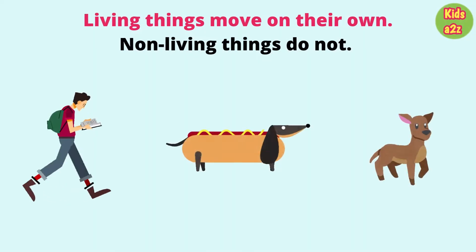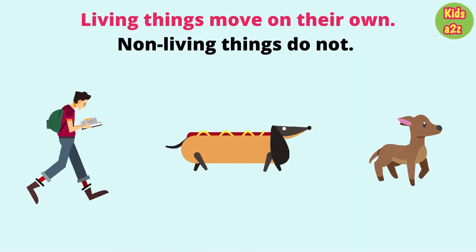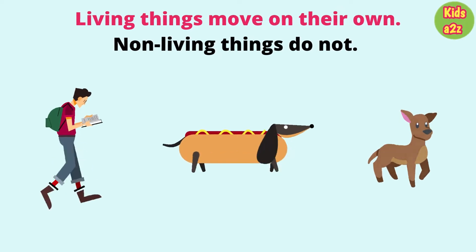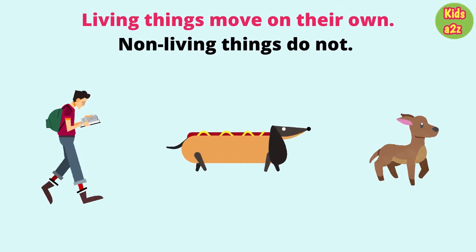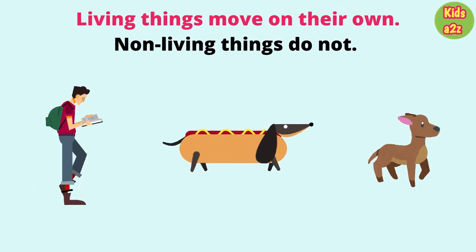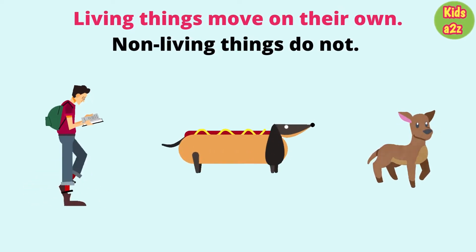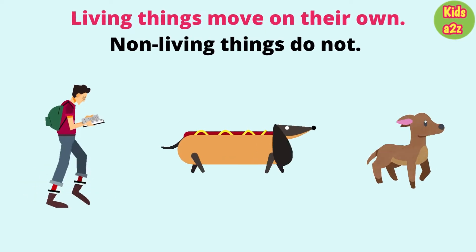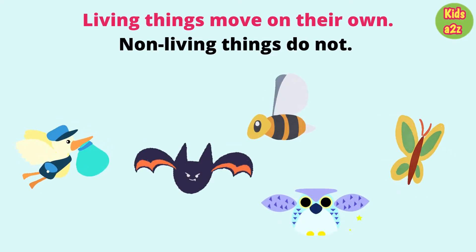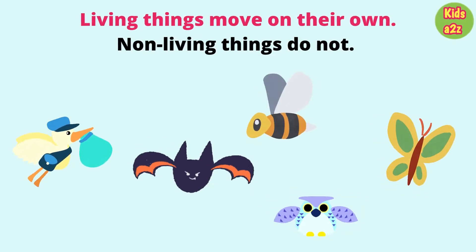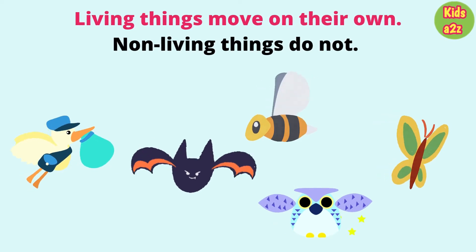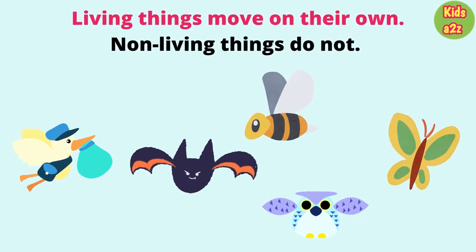Living things move on their own. Non-living things do not. Just like us, most animals walk on their legs. Birds and bats use their wings to fly. Fish use their fins to swim.